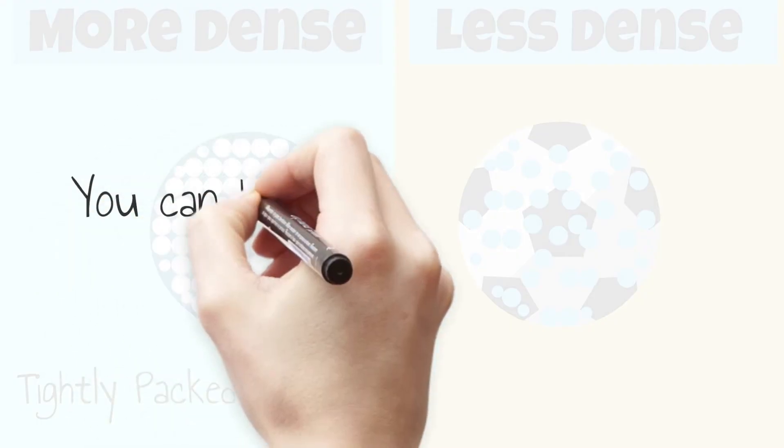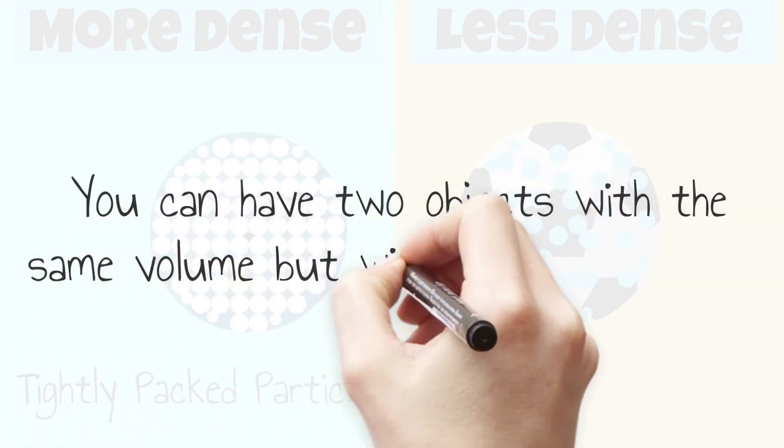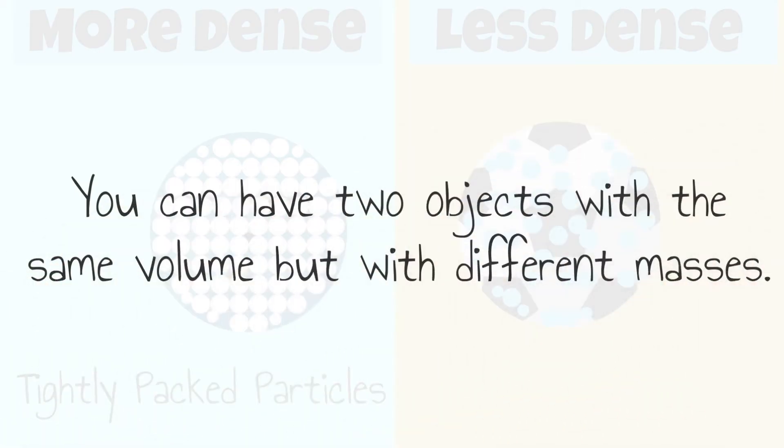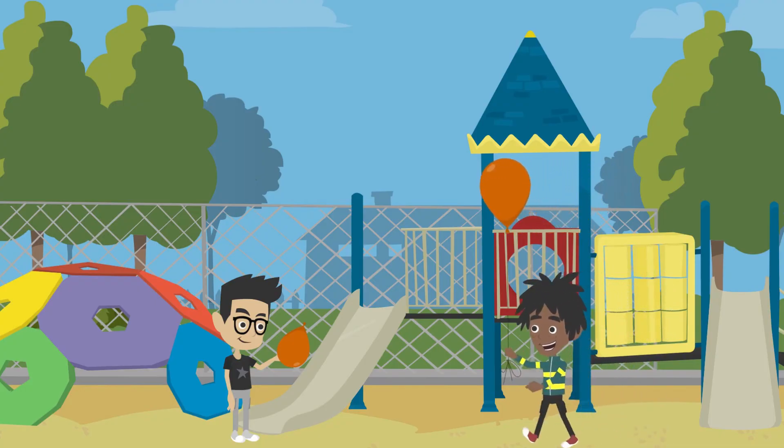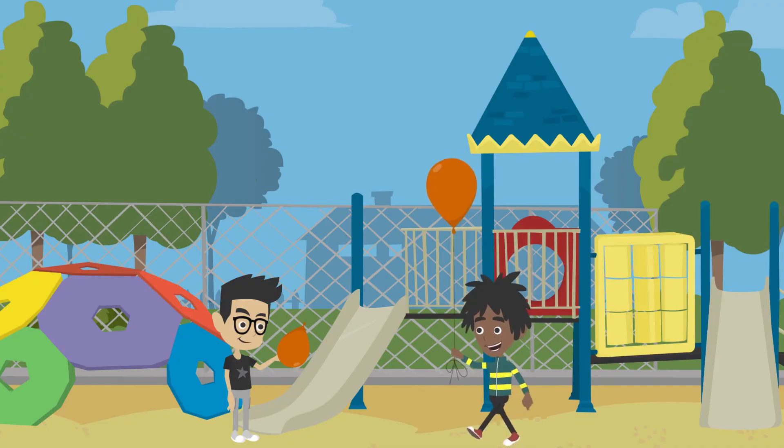That means that you can have two objects with the same volume, but with different masses. A balloon filled with air would have less mass than one of the same size filled with water.